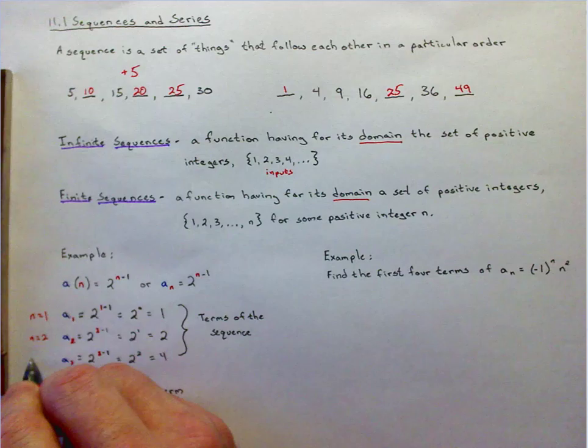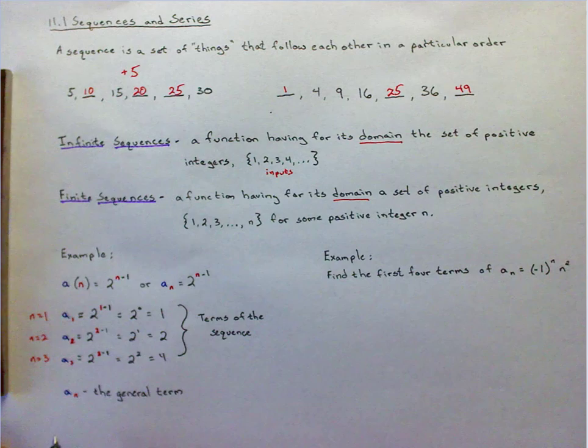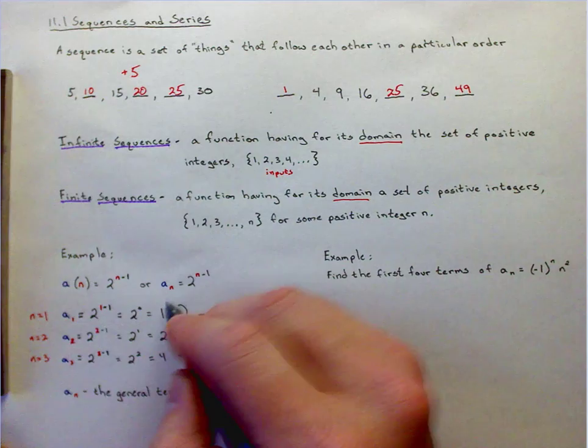And then I let n equal 3. So everywhere there's an n, I write the number 3. So a sub 3 equals 2 to the 3 minus 1, which equals 2 squared, which equals 4.